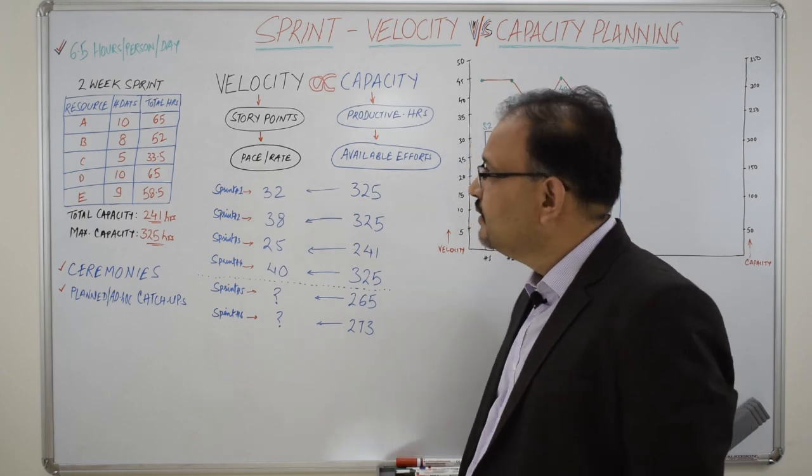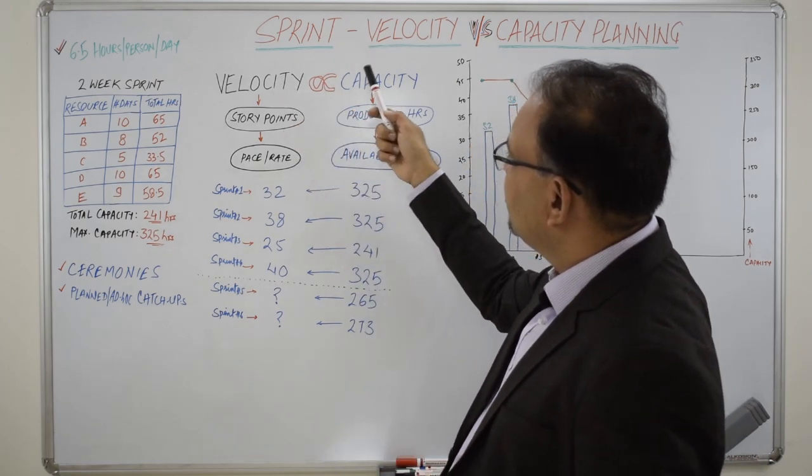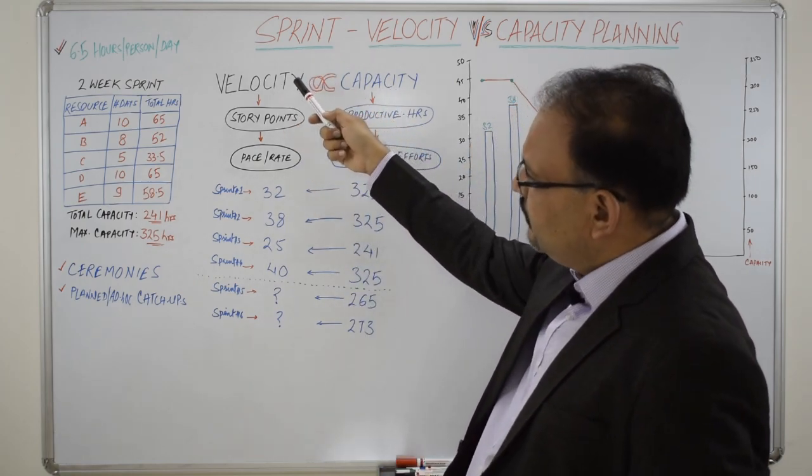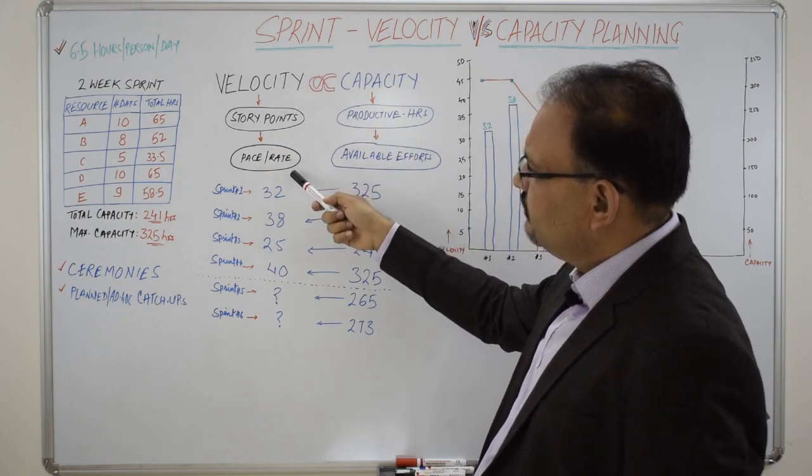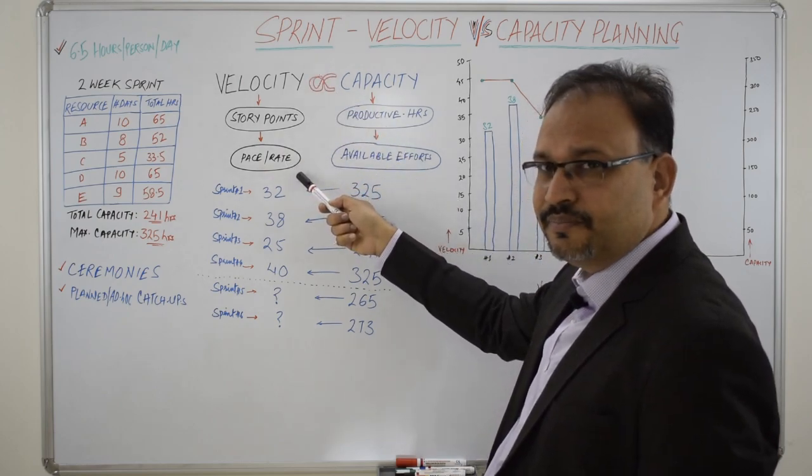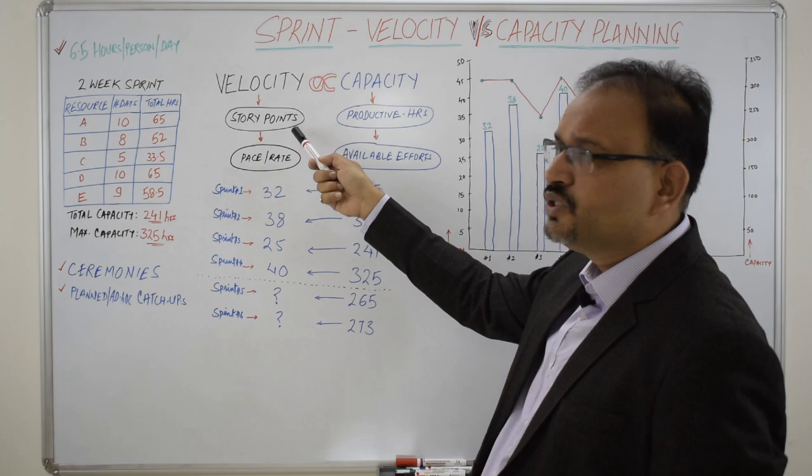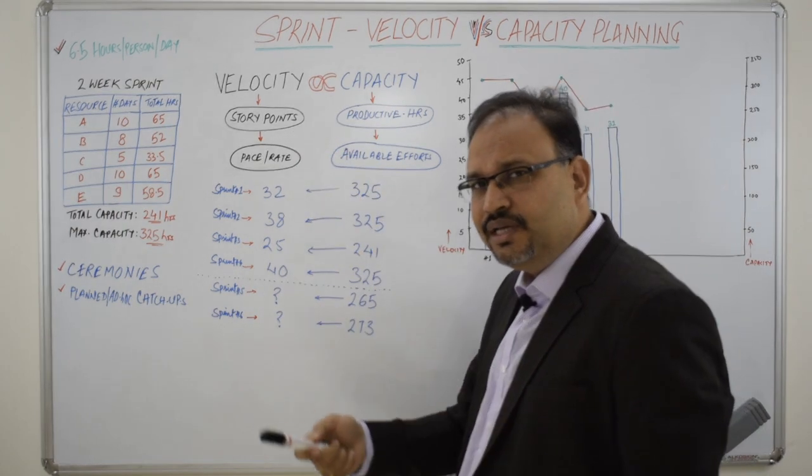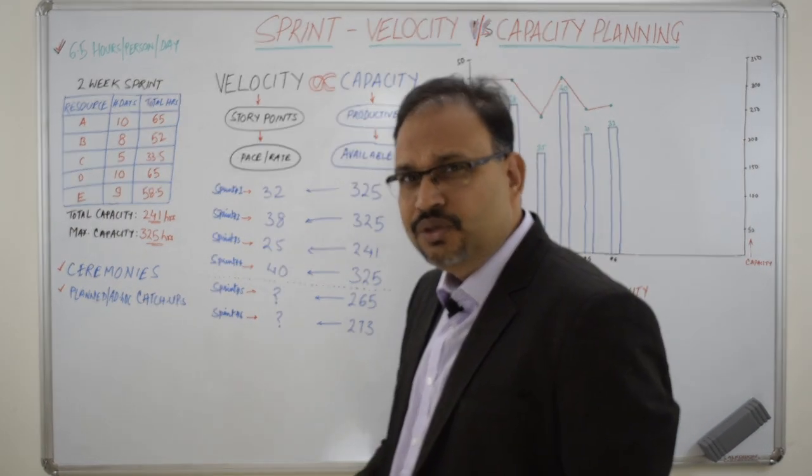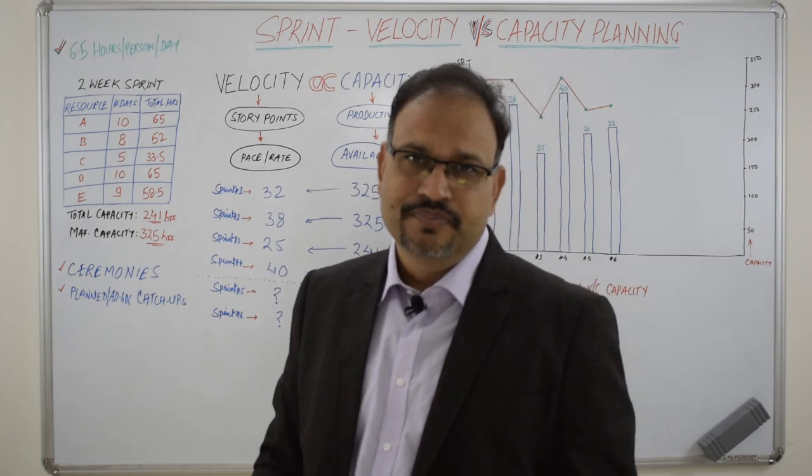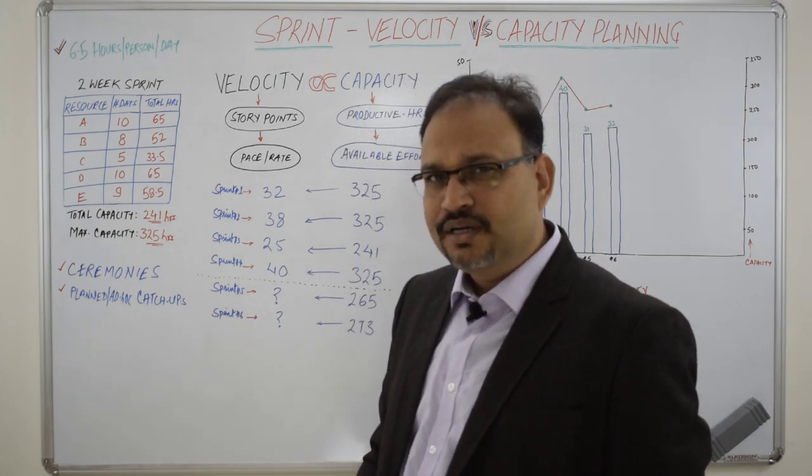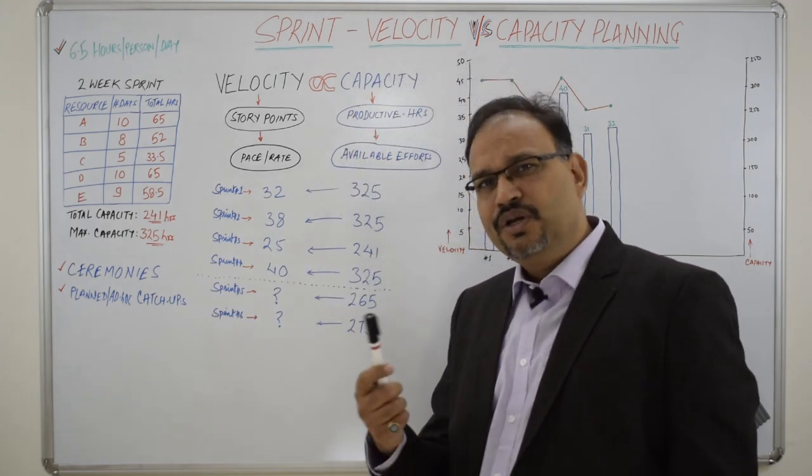Let's first understand what is the velocity and the capacity of the team. Velocity is the pace or the rate with which the team delivers the stories. Rate is measured in terms of the story points. Every story is assigned a story point during the process of Agile estimation. This is a separate session which I recorded on Agile estimation. You can go and refer that.